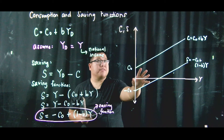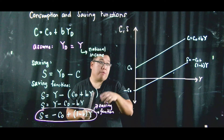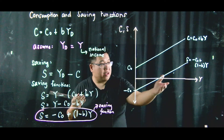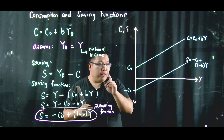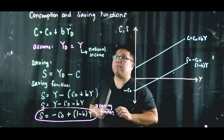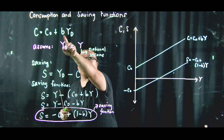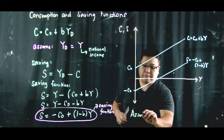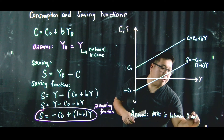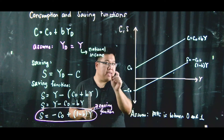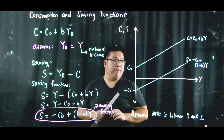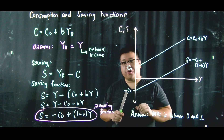The consumption function is upward sloping — as national income increases, aggregate consumption increases. The saving function is also upward sloping. We now assume that MPC, or B, is between 0 and 1. If B is between 0 and 1, then 1 minus B is also between 0 and 1, which keeps the saving function upward sloping.